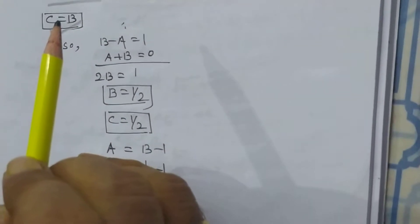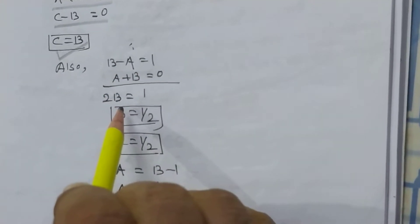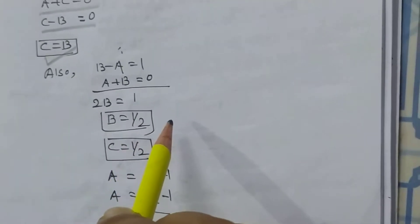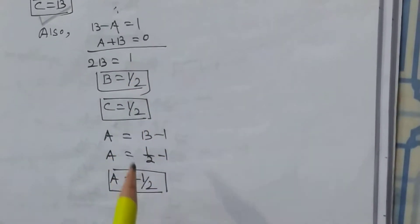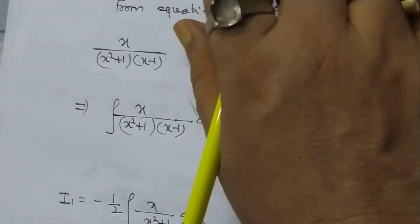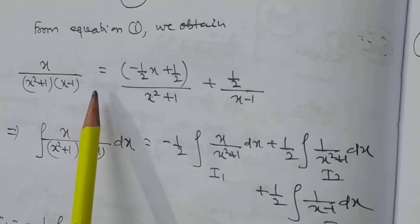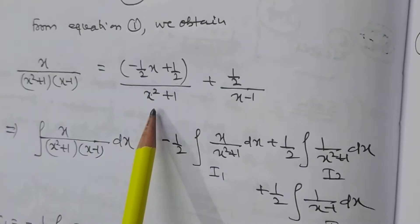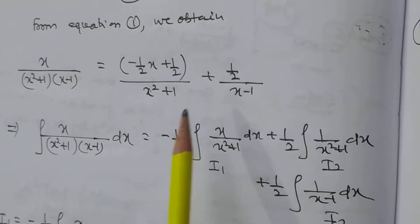So c = b. Also, b - a = 1 and a + b = 0. Adding, we get 2b = 1, so b = 1/2, c = 1/2. And now we can find the value of a = -1/2. So now we write x/[(x² + 1)(x - 1)] as (-½x + ½)/(x² + 1) + ½/(x - 1).